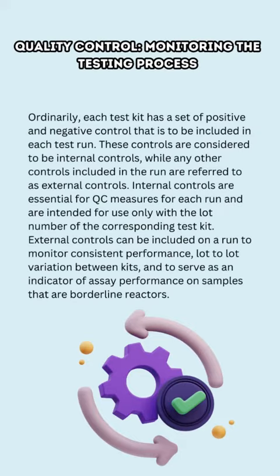Quality Control involves monitoring the testing process. Ordinarily, each test kit has a set of positive and negative controls that are to be included in each test run. These controls are considered internal controls, while any other controls included in the run are referred to as external controls. Internal controls are essential QC measures for each run and are intended for use only with the lot number of the corresponding test kit. External controls can be included on a run to monitor consistent performance, lot-to-lot variation between kits, and to serve as an indicator of assay performance on samples that are borderline reactors.